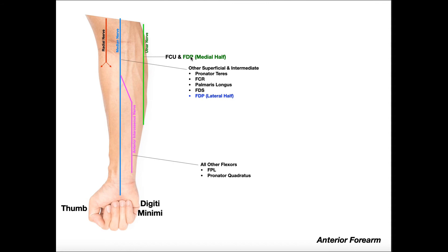As for flexor digitorum profundus (FDP), it has split innervation. Its medial half is innervated by the ulnar nerve and its lateral half by the median nerve. The way I remember this: the name profundus comes from profundity — it's a profound, big muscle, so its innervation is also profound. It has two innervations. The medial half, closer to the ulnar side, is innervated by the ulnar nerve; the lateral half, closer to the middle of the forearm, is innervated by the median nerve.